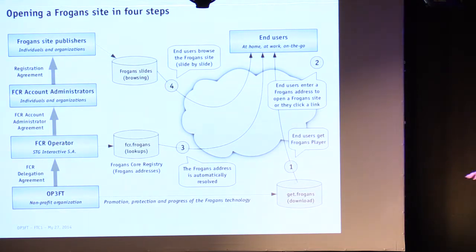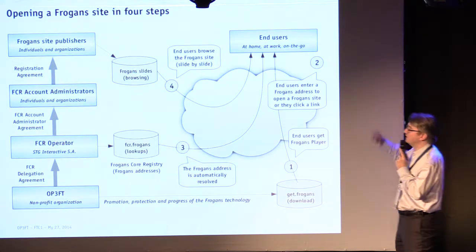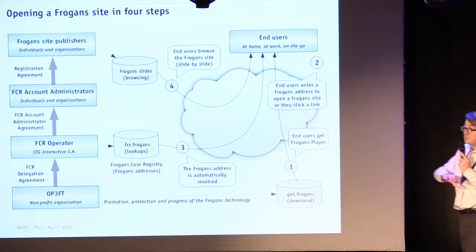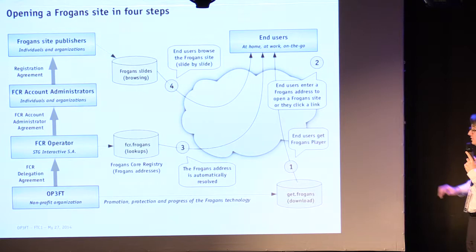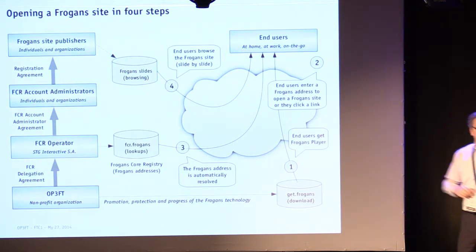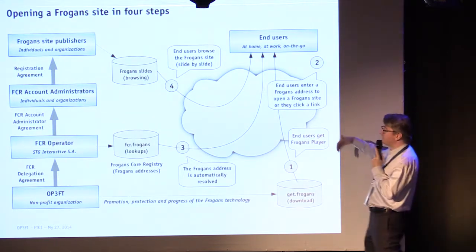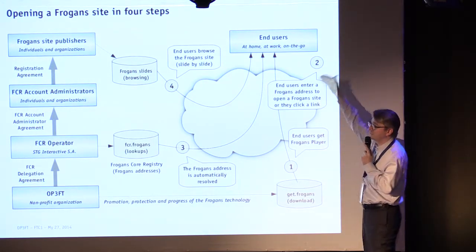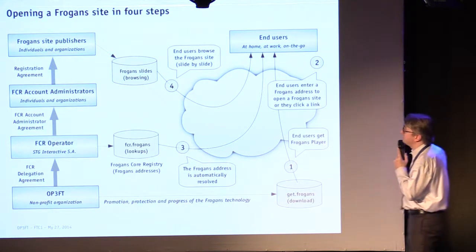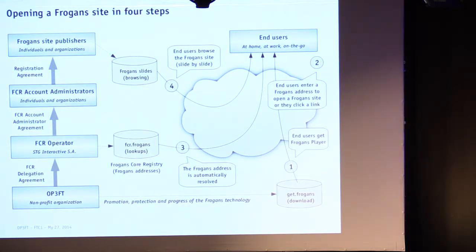Once you've downloaded the FROGANCE player, you need to enter a FROGANCE address — which has a star somewhere in the character string. Instead of entering the address manually, you could also click on a link, because the FROGANCE layer works in interaction with other existing software layers. Links on a web page or in an email could allow an internet user to click directly and open the FROGANCE site.